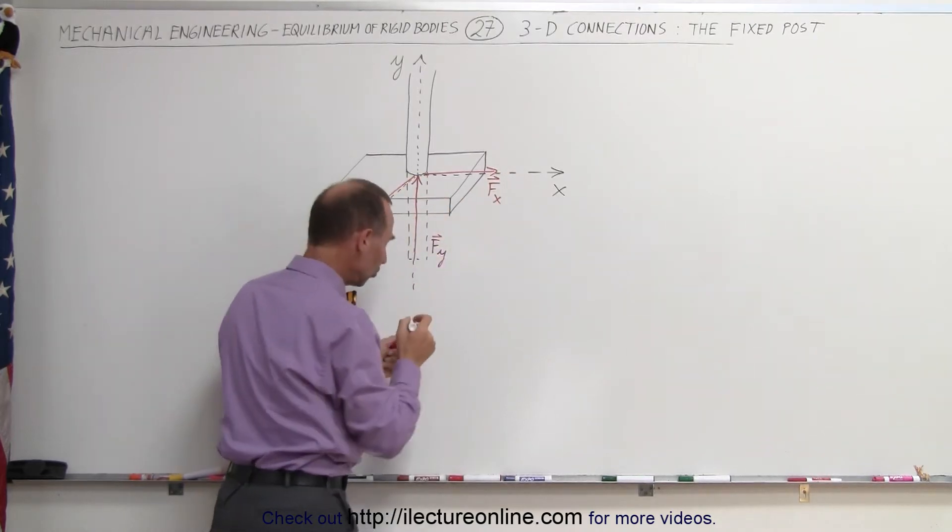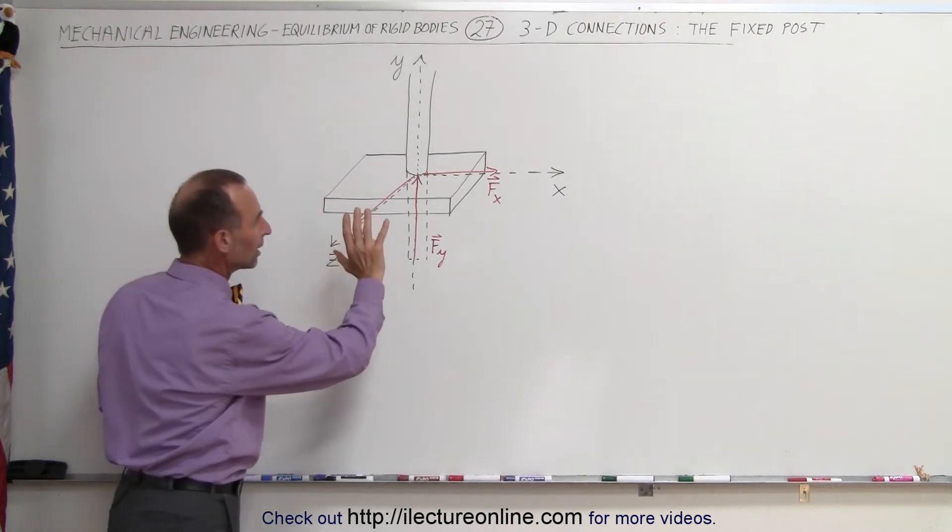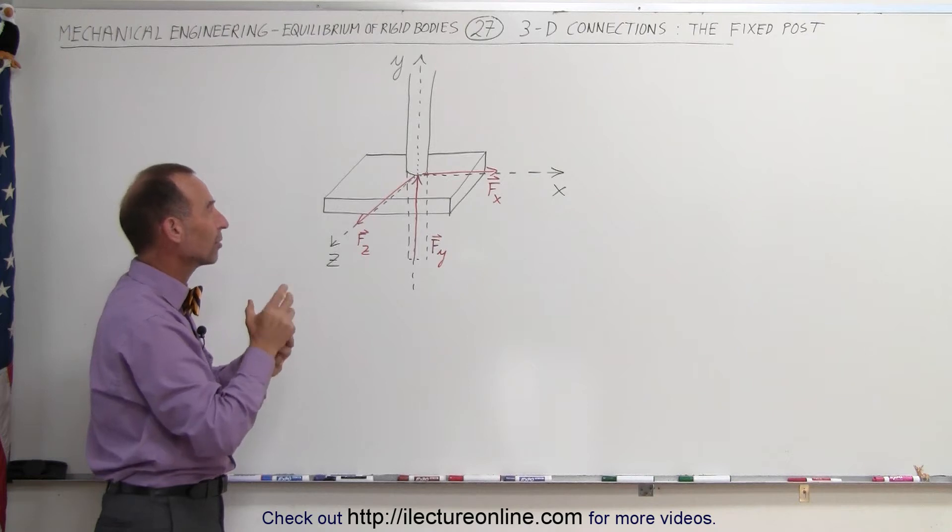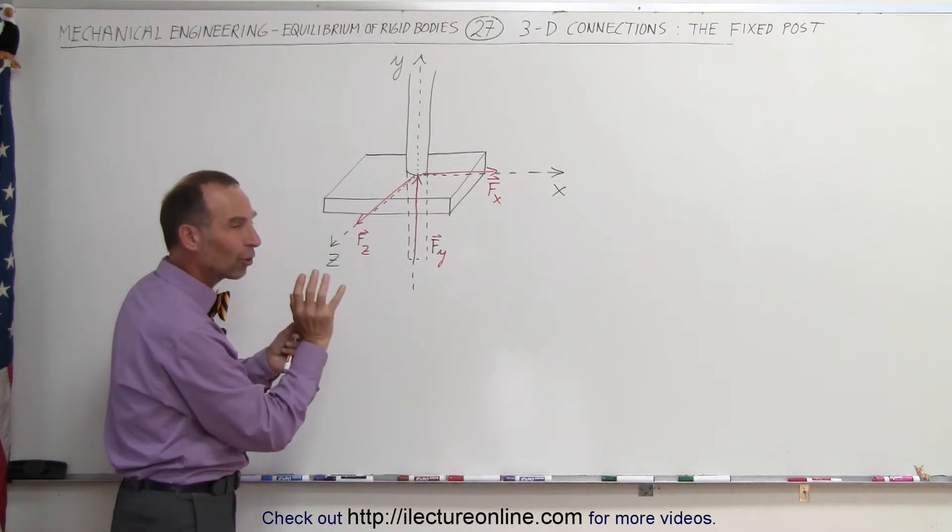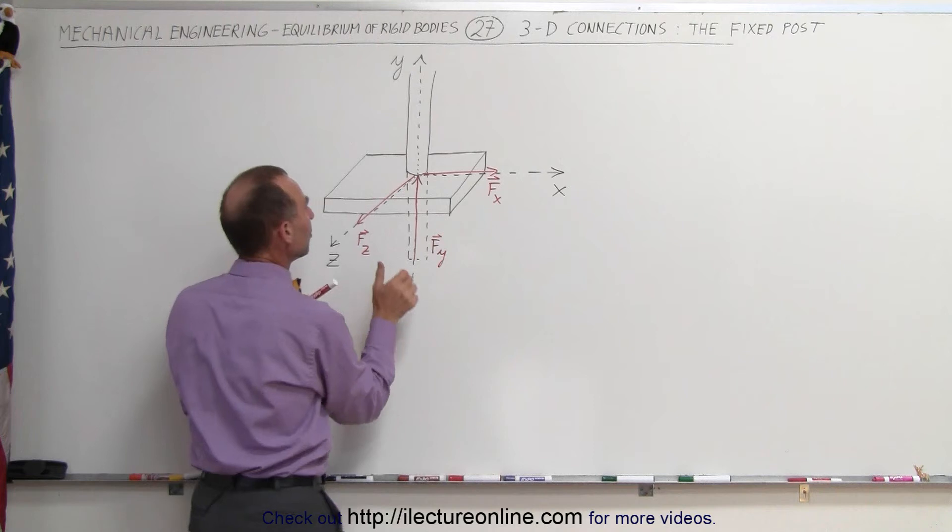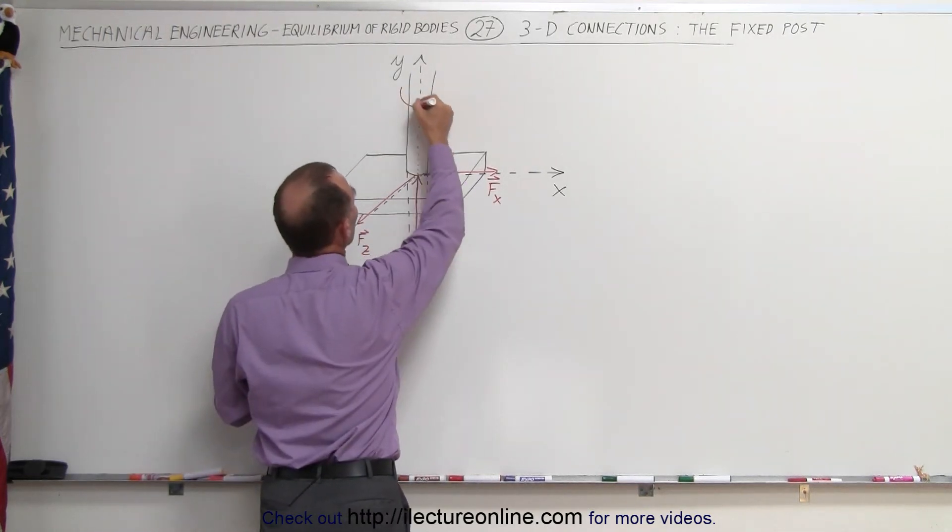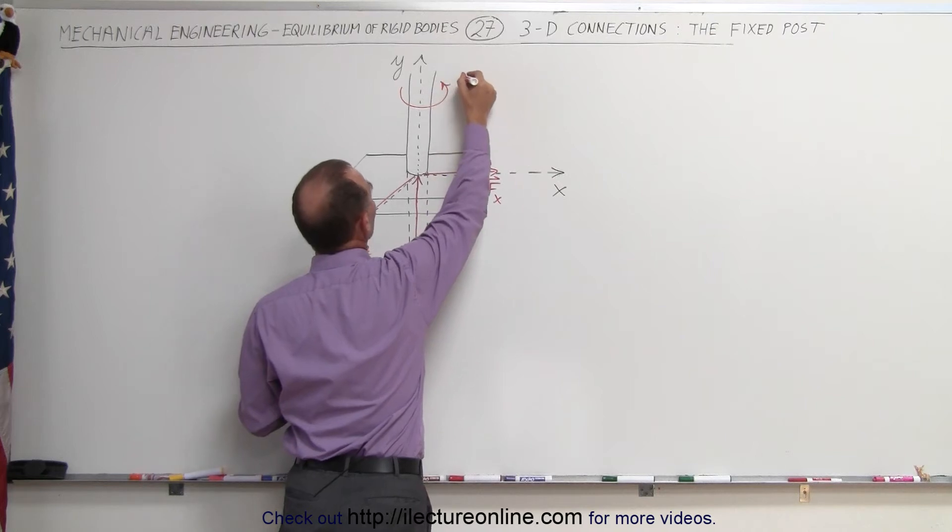But then we have some additional constraints. The post cannot rotate in the y direction. That creates a moment in the y direction. So you can actually apply a force and the post will resist that force. So we have a moment, so you put your thumb in this direction, you see your finger scrolling that way. So there's a moment like this in the y direction.